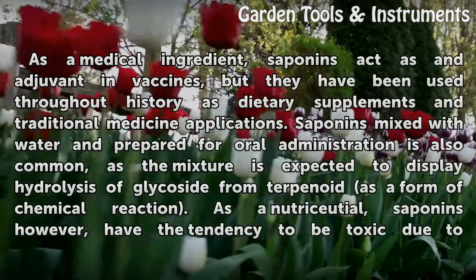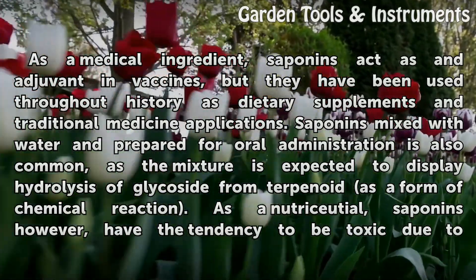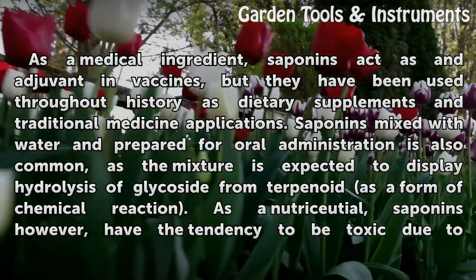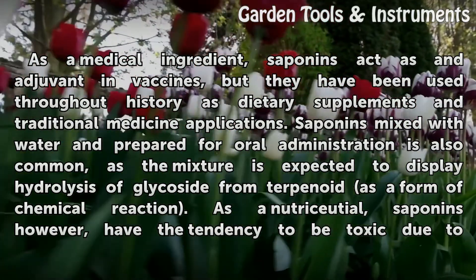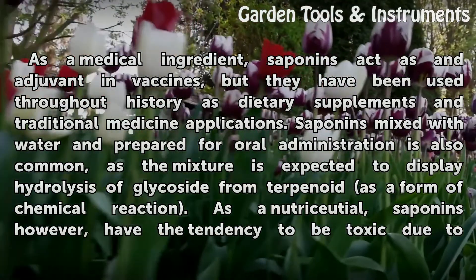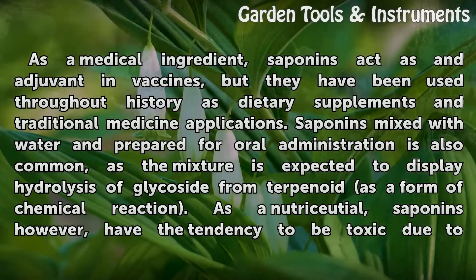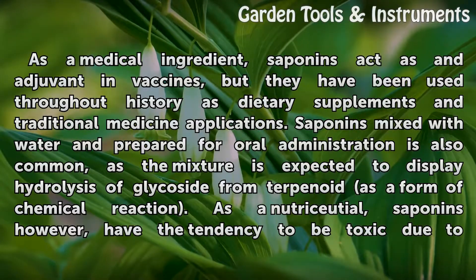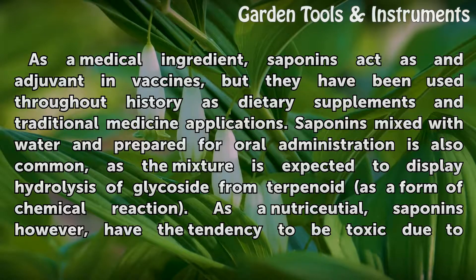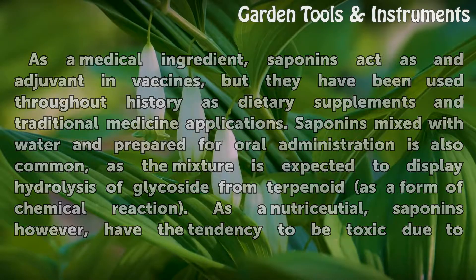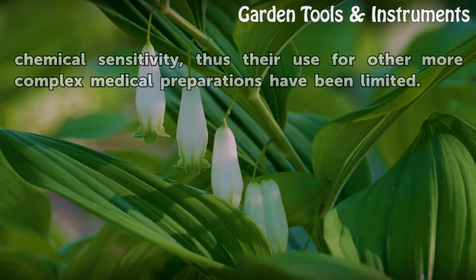As a medical ingredient, saponins act as an adjuvant in vaccines, but they have been used throughout history as dietary supplements and traditional medicine applications. Saponins mixed with water and prepared for oral administration is also common, as the mixture is expected to display hydrolysis of glycoside from terpenoid as a form of chemical reaction. As a neuterosideal, saponins however have the tendency to be toxic due to chemical sensitivity, thus their use for other more complex medical preparations has been limited.